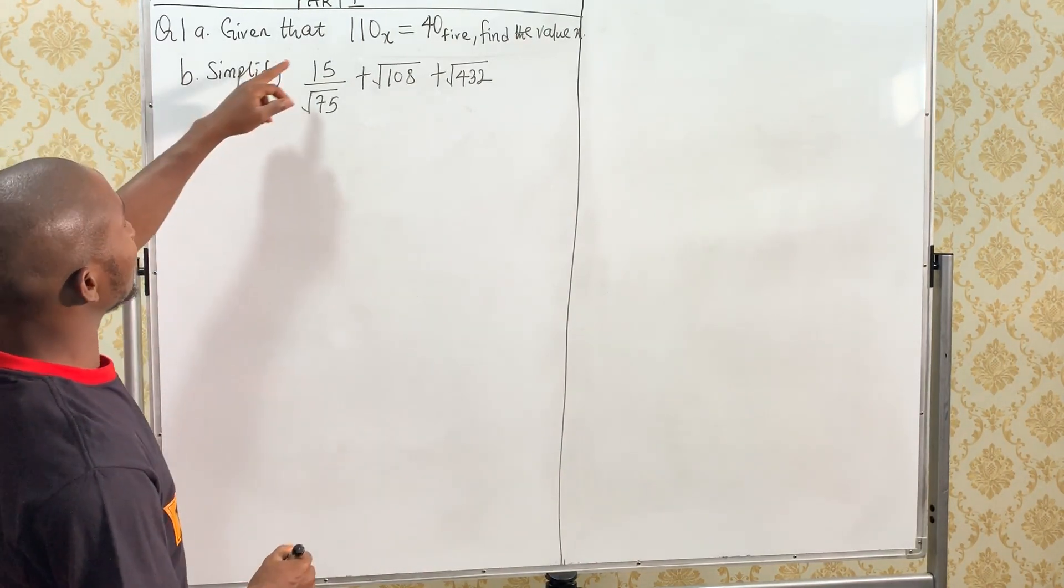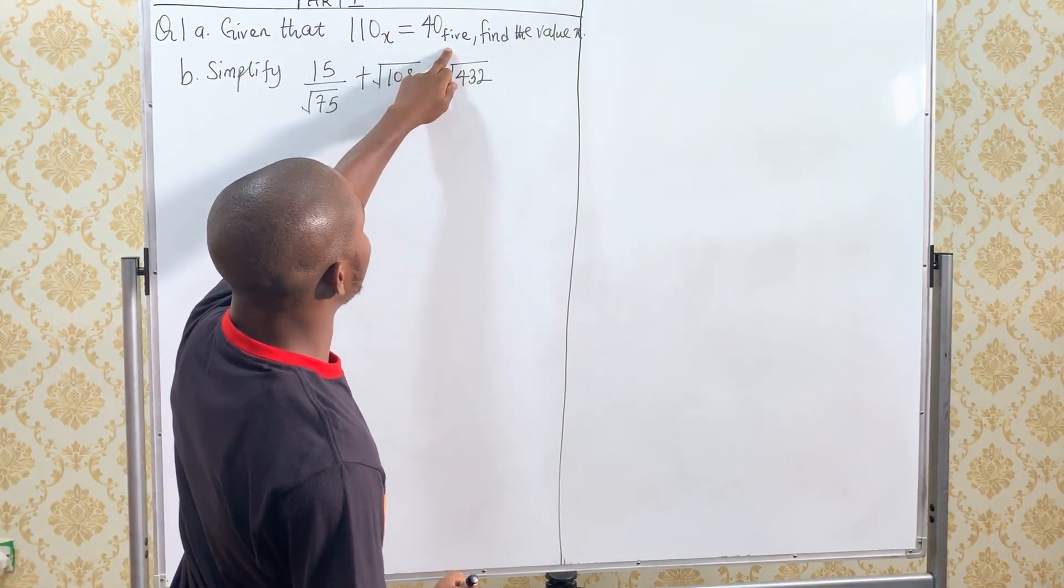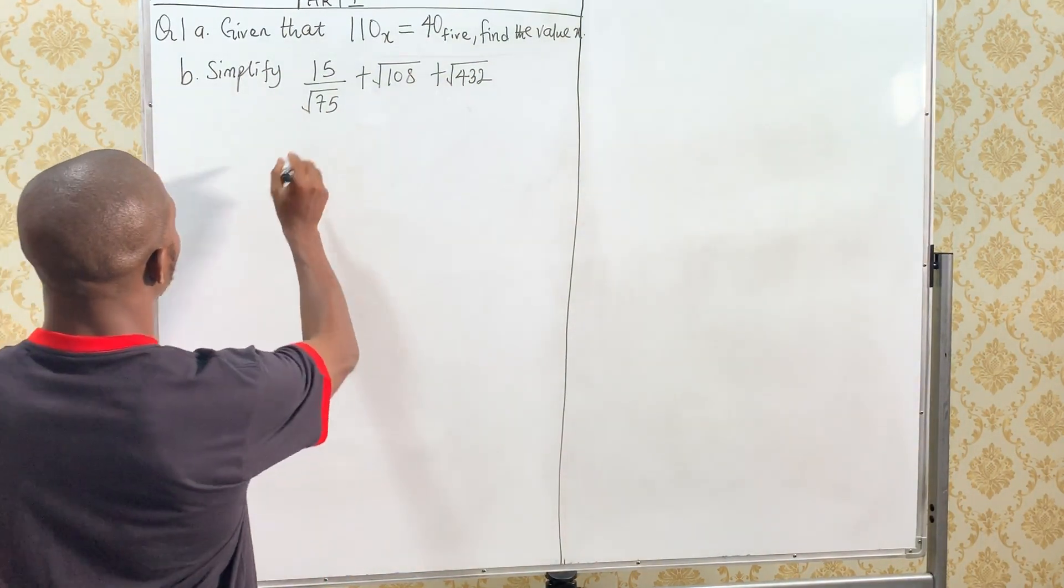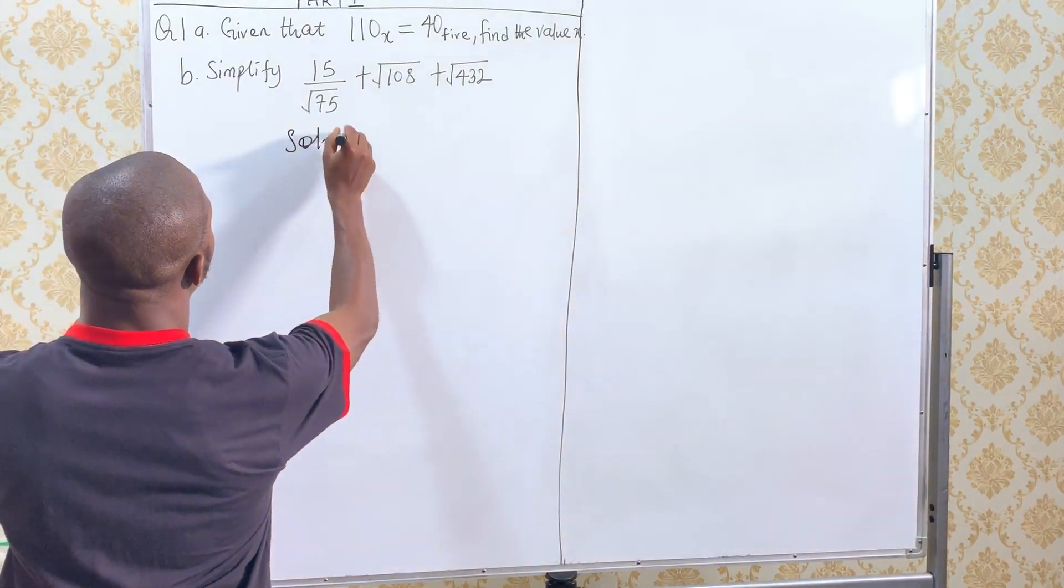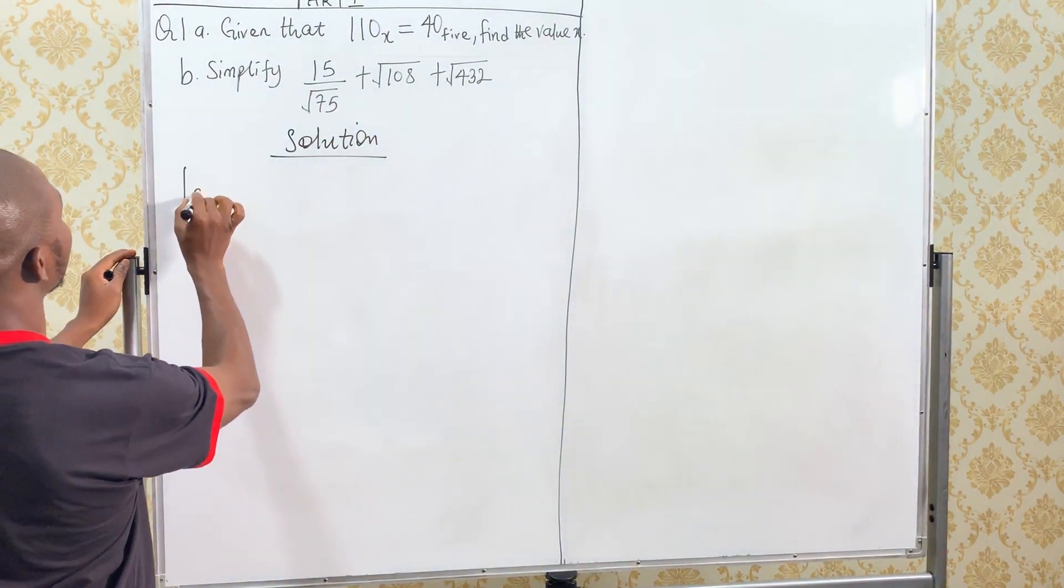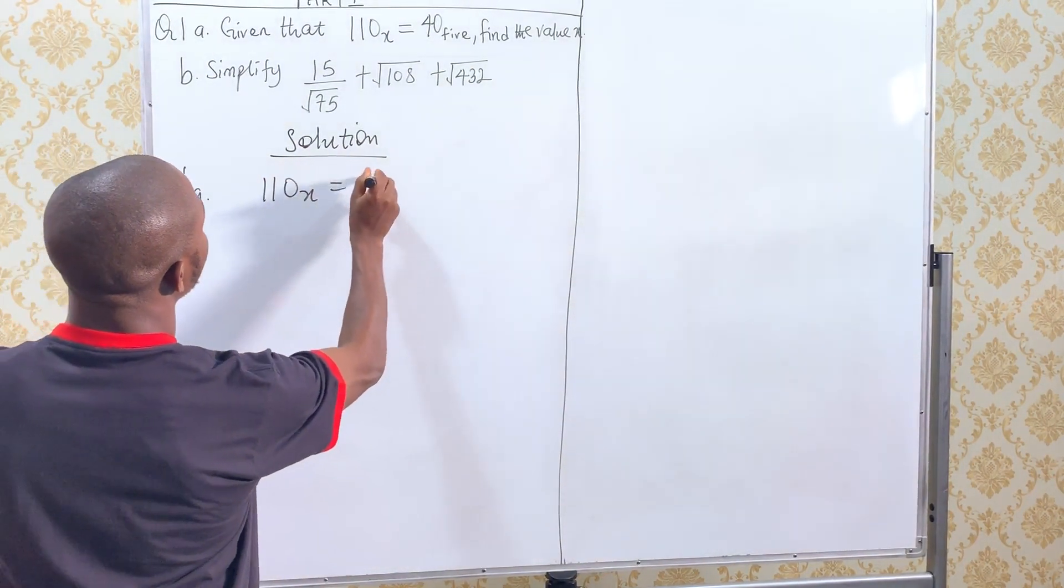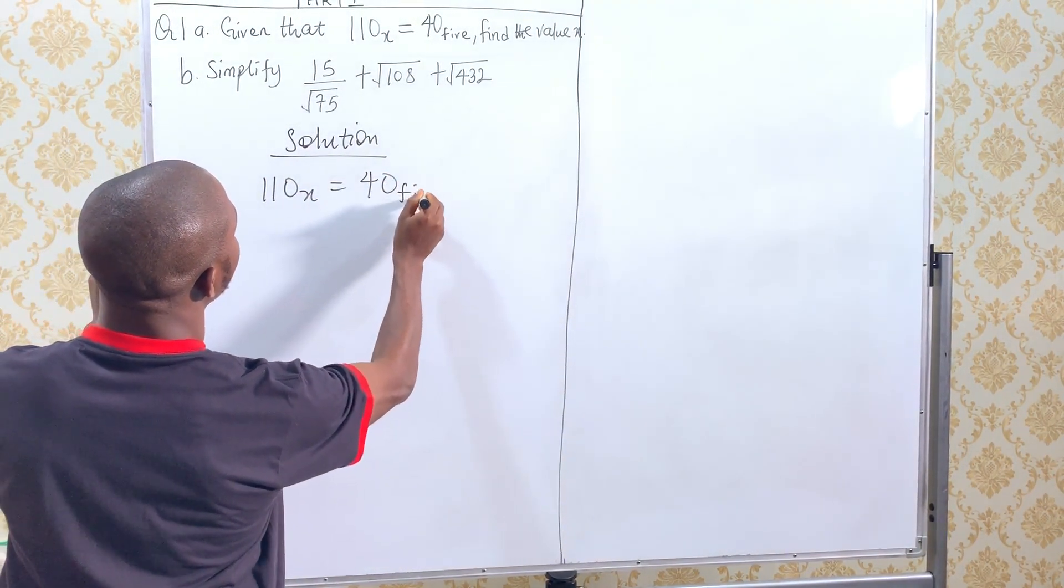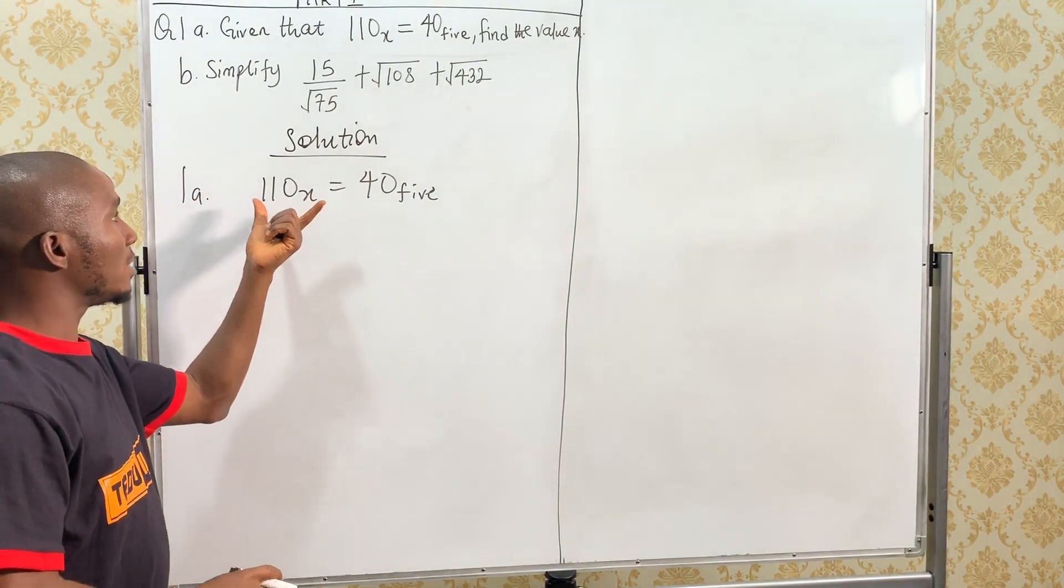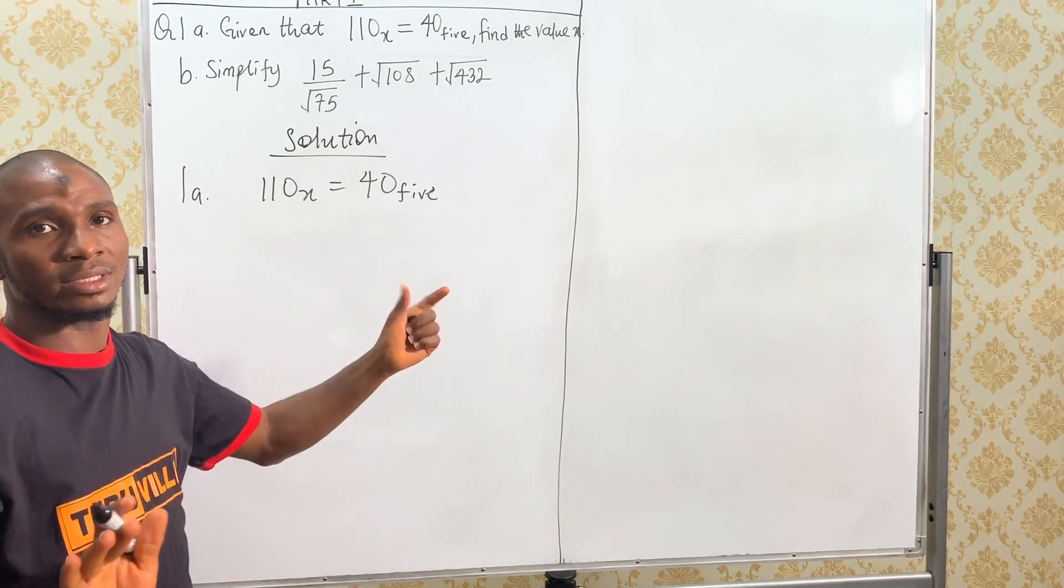The question is, given that 110 base X equals 40 base 5, find the value of X. That is question 1A. So, we are starting with question 1A. Given that 110 base X is equals to 40 in base 5, you have to find the value of X. So, the simplest way to do this is to convert this to base 10, convert this to base 10, then you find the value of X, that's all.